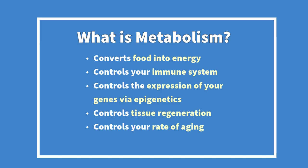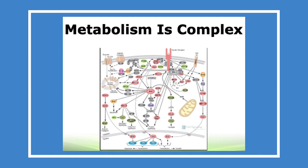What is metabolism? It converts food into energy, but it also controls your immune system, the expression of your genes via epigenetics, tissue regeneration, and your rate of aging. And that's why metabolism is so complex. Inside a single cell — and you have 37 trillion — it's a constant dynamic feedback of inputs coming from the blood to turn on and turn off various complex reactions. And if you think metabolism is complex, the systems that control metabolism are even more complex.